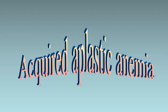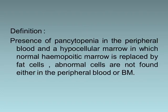Acquired Aplastic Anemia. It is defined as the presence of pancytopenia in the peripheral blood and a hypocellular marrow in which normal hemopoietic marrow is replaced by fat cells. Abnormal cells are not found either in the peripheral blood or bone marrow.